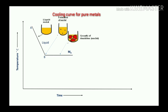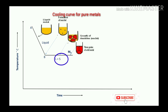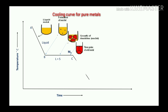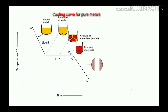During the B to C process, the nuclei undergo growth and the metal converts into 100% solid. So between B and C, the material goes from 100% liquid to 100% solid. After point C, the temperature continues to reduce with respect to time, and the material remains 100% solid.